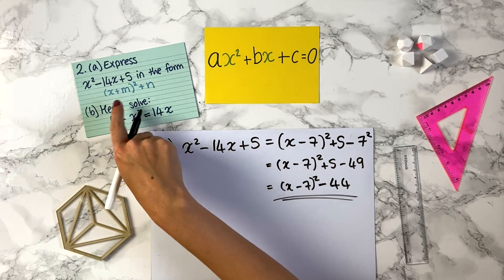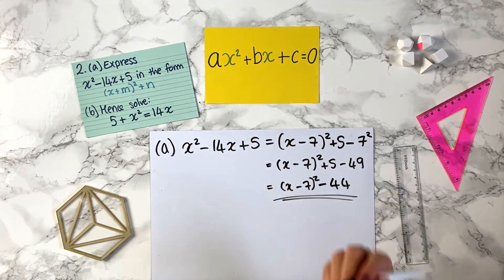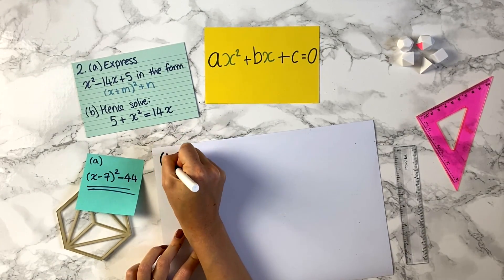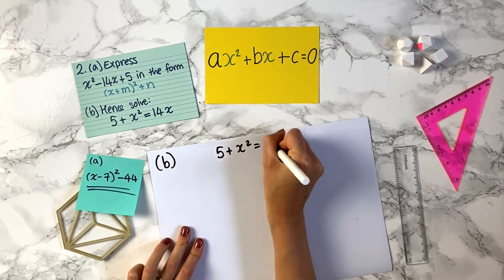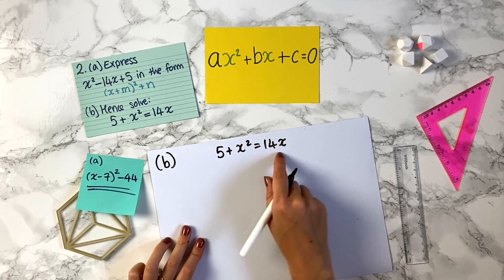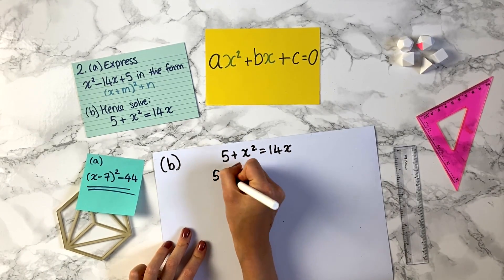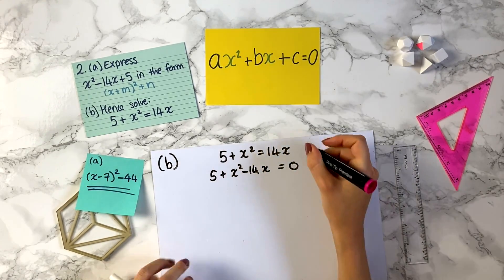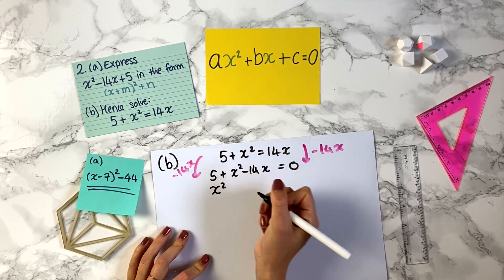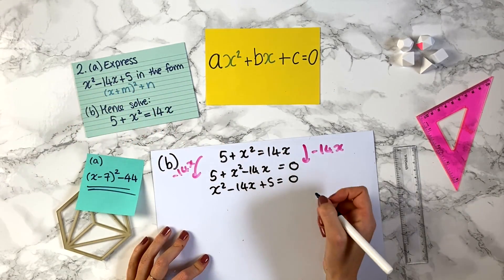That's the answer to part a. So m is minus 7 and n is minus 44. Now for part b, hence solve 5 plus x squared equals 14x. This looks a little different, but the first thing to do when you see it in a funny format is rearrange it so it looks like our standard quadratic equation. If we subtract 14x from both sides, we get x squared minus 14x plus 5 equals 0, which looks like the expression we had in part a — so that's a good sign.